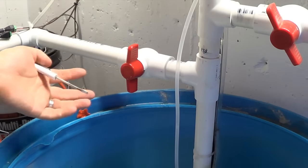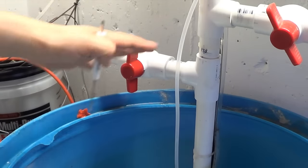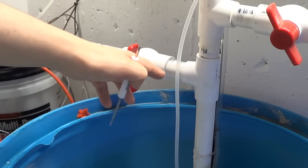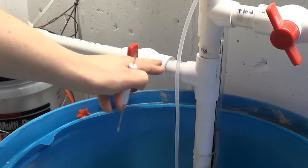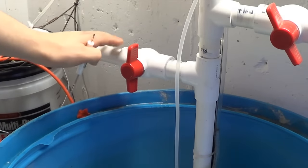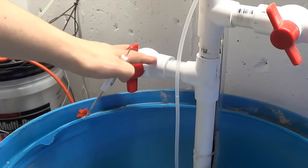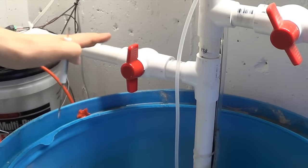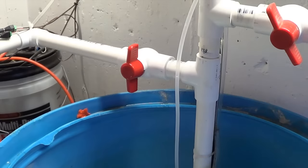Sometimes unions are used to reduce the chance of something like this happening, sometimes threaded ball valves are used. But if you're in a situation where you have a ball valve already welded in place and you have a problem with your handle, this is a quick way you can fix it.